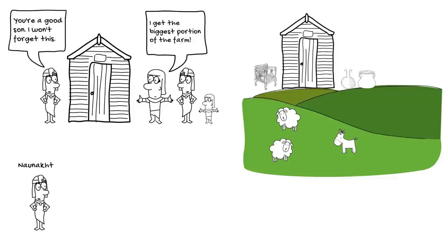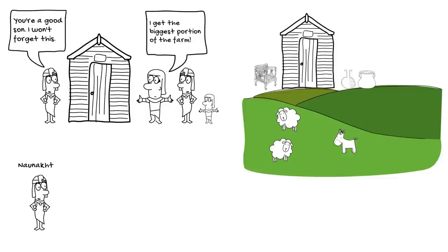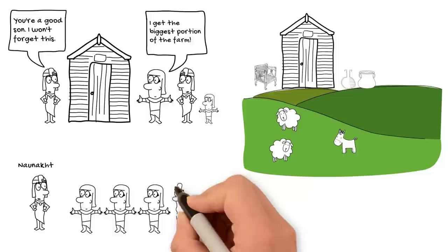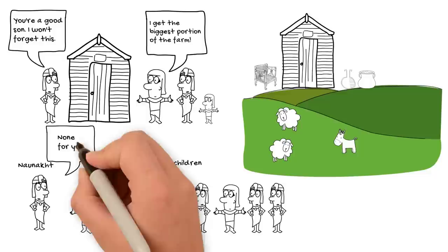How important it was for ancient Egyptians to take care of their parents in old age is driven home in a New Kingdom legal document that was drawn up for a woman named Nao Noct. In this document Nao Noct describes how out of her eight children only some of them helped take care of her, and those who didn't help take care of her she disinherited.